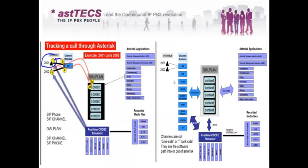So this is how the four Asterisk APIs — the Channel Module API, Application API, File Format API, and Codec Translator API — work. The dial plan controls all these things: how to utilize them once the call comes in. Once an Asterisk call enters the Asterisk system through the channel module and passes to the dial plan — the core of Asterisk — it can be handled however we want. We can use different codec levels for the extension side versus the trunk side, and different channel protocols on each side.